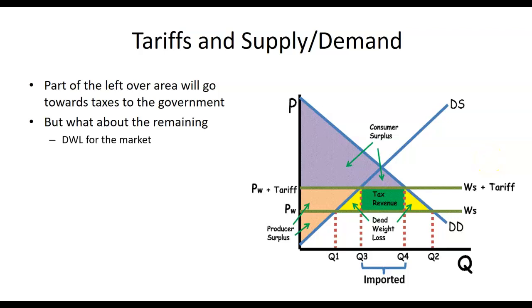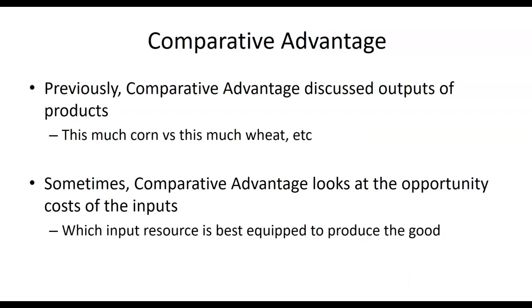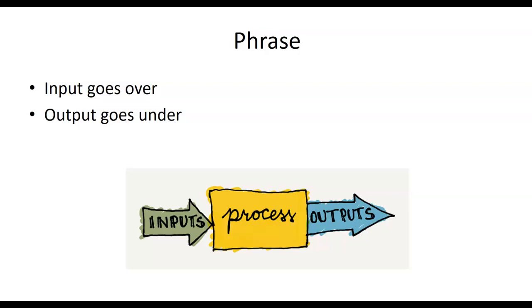With that said, we're just changing gears really drastically and talking about comparative advantage. Previously on comparative advantage, we discussed the outputs. You can produce this much corn, this much wheat. Sometimes, though, we want to look at the inputs. This many hours worked. This many number of workers used to produce this one good. So it's going to be a slight variation of what we have been talking about. Now, a phrase I heard a long time ago is, input goes over, output goes under.